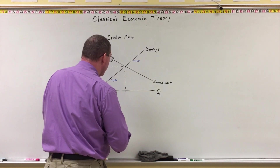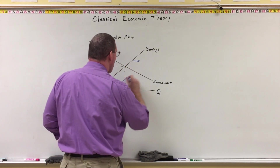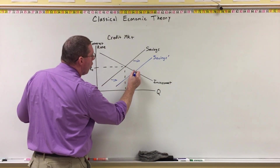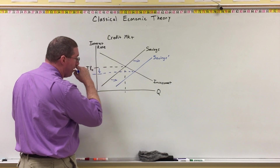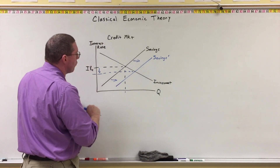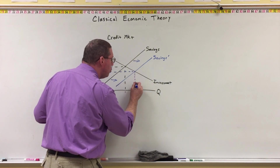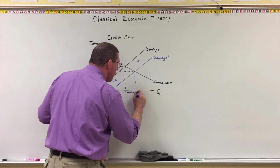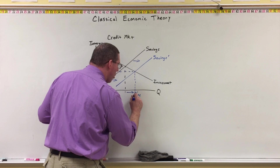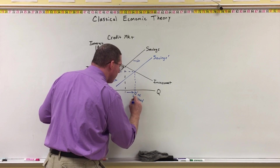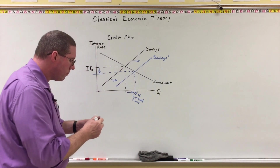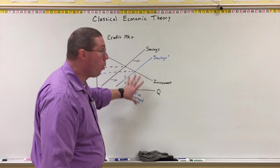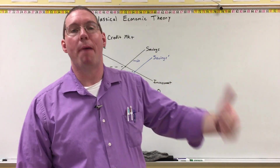So the savings curve is going to shift to the right — we'll put savings prime. When that happens, that's going to cause a decrease in interest rates because savings has gone up. And when interest rates decrease, borrowers are going to be willing to borrow more, and we're going to have an increase in the quantity — Q prime — of borrowed funds. And what that means is that more businesses and more individuals are going to borrow more money, and when they do that, they're going to go spend it.